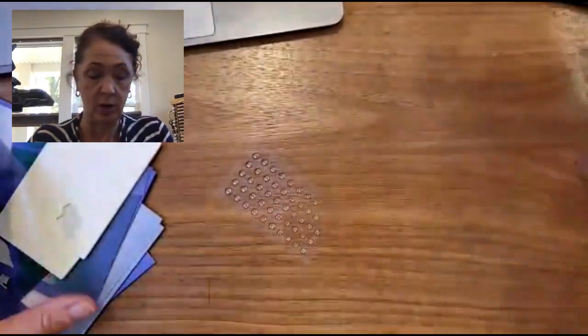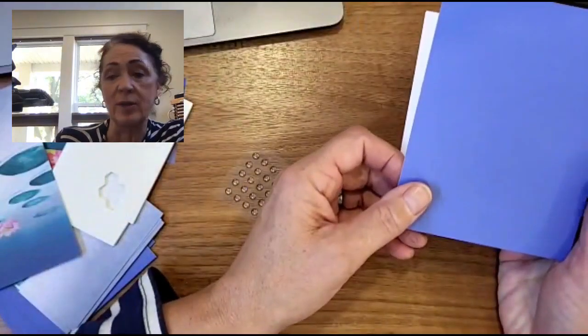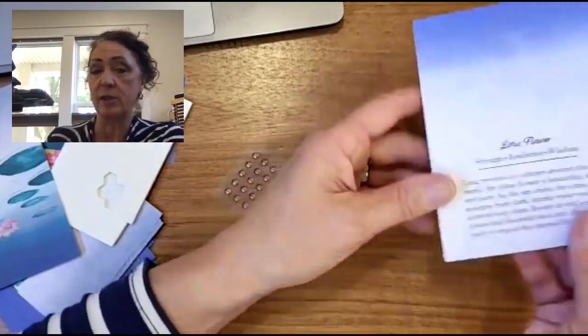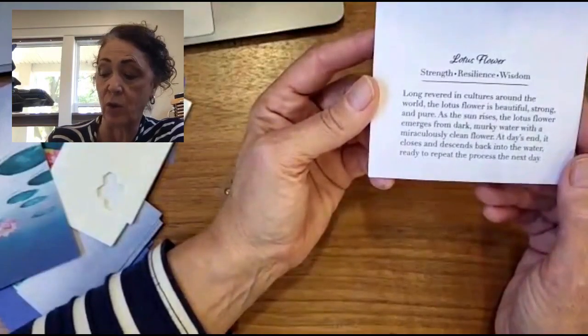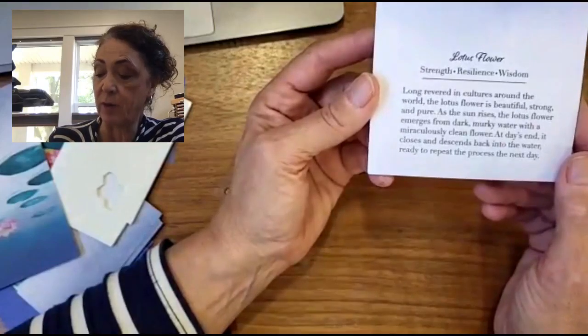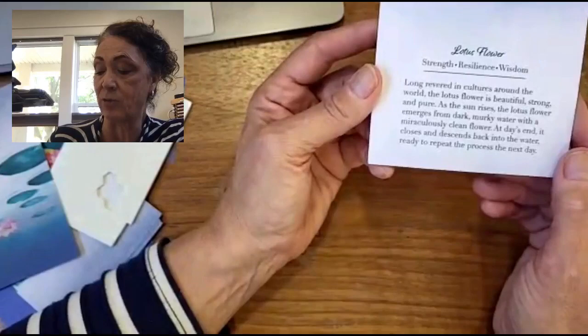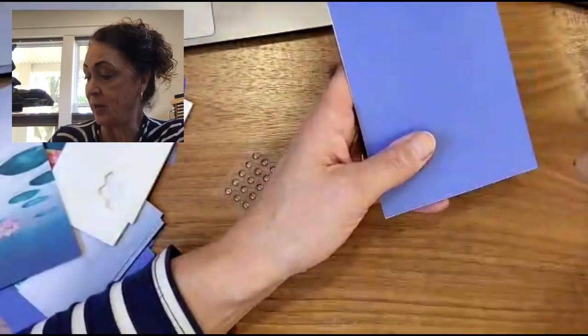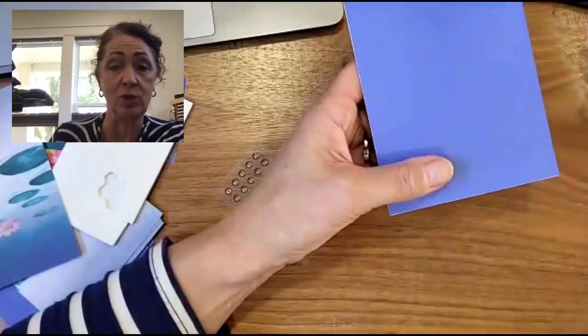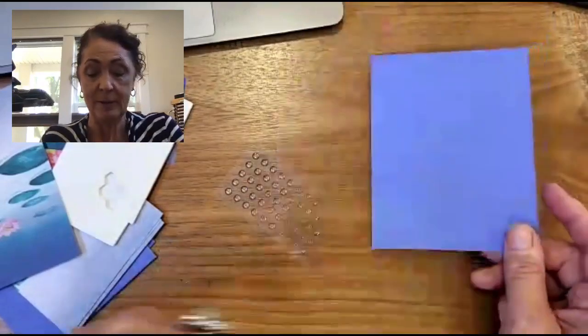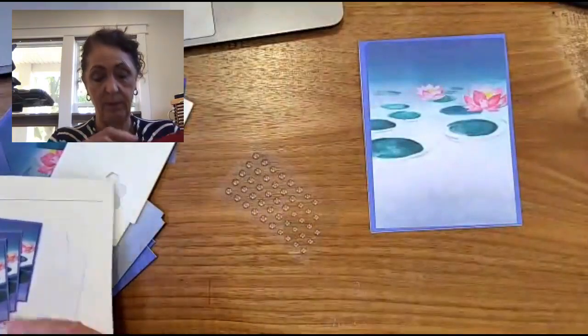Now we're going to do our lotus card. So we start with a card that looks like Orchid Oasis. And it says Lotus Flower: strength, resilience, and wisdom. Long revered in cultures around the world, the lotus flower is beautiful, strong, and pure. As the sun rises, the lotus flower emerges from the dark, murky water with a miraculously clean flower. At day's end, it closes and descends back into the water, ready to repeat the process the next day. That's why we have the saying, you rise above the rest. The lotus flower rises up above the water. I didn't know that.